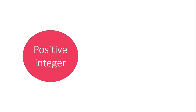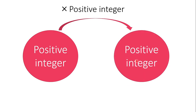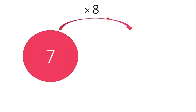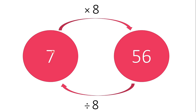If you multiply a positive integer by another positive, the product would be a positive integer. Likewise, when we divide a positive by another positive, the quotient would be still a positive integer. For example, 7 times positive 8, the product is 56. So vice versa, when we divide 56 by positive 8, the quotient is still positive 7.